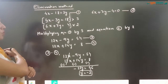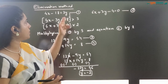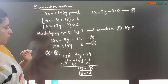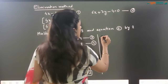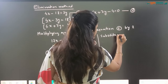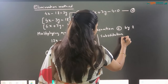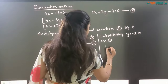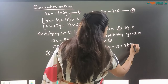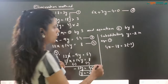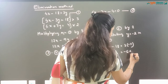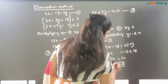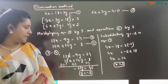Now substitute this value in any of the equations — equation 1, 2, 3, or 4. Looking for the smaller equation, I'll substitute y equals minus 2 in equation 1: 4x minus 18 equals 3 into minus 2. So 4x equals minus 6 plus 18, giving 4x equals 12, therefore x equals 12 divided by 4, which is 3. So we got the value of x as 3 and y as minus 2.